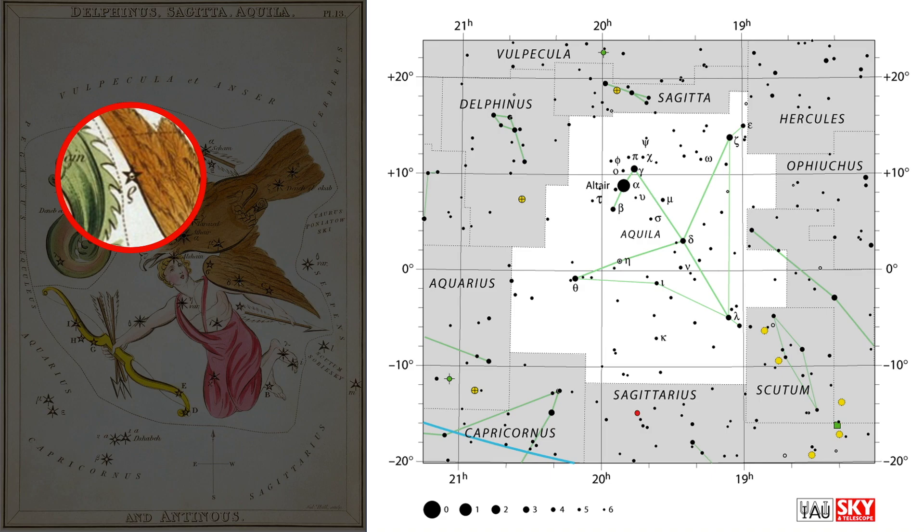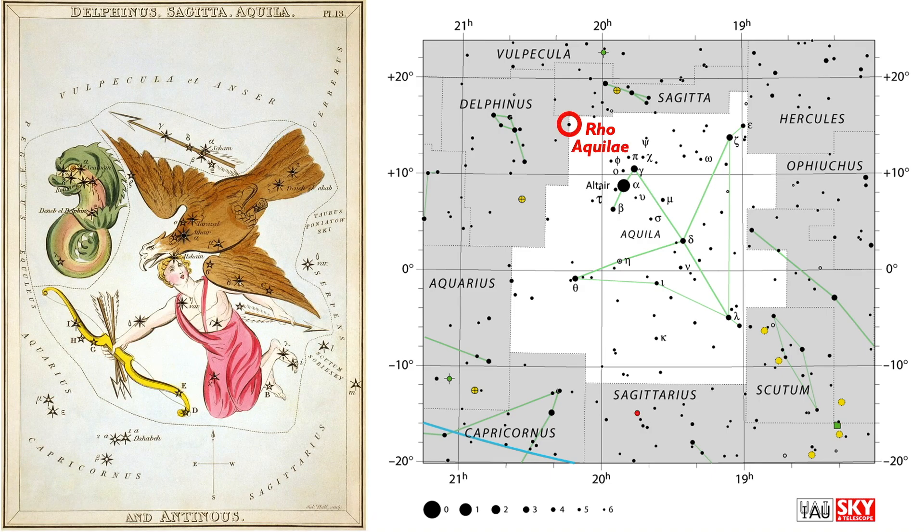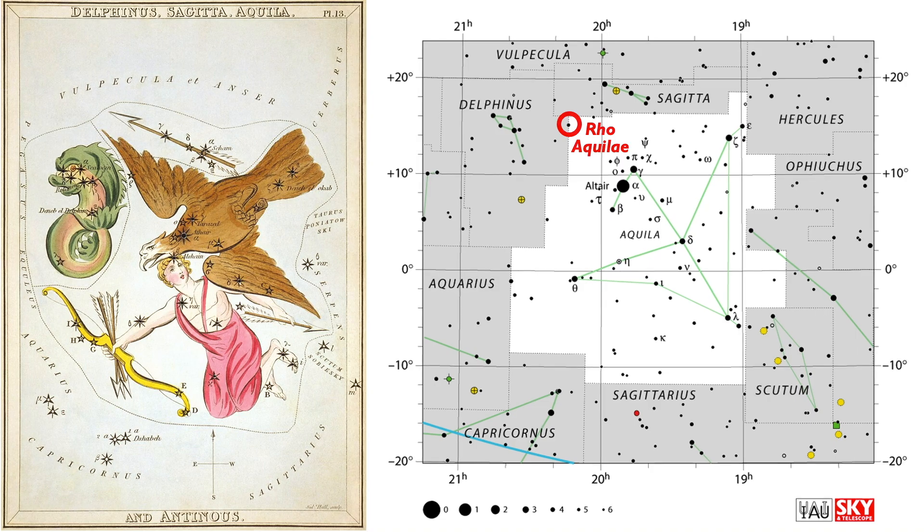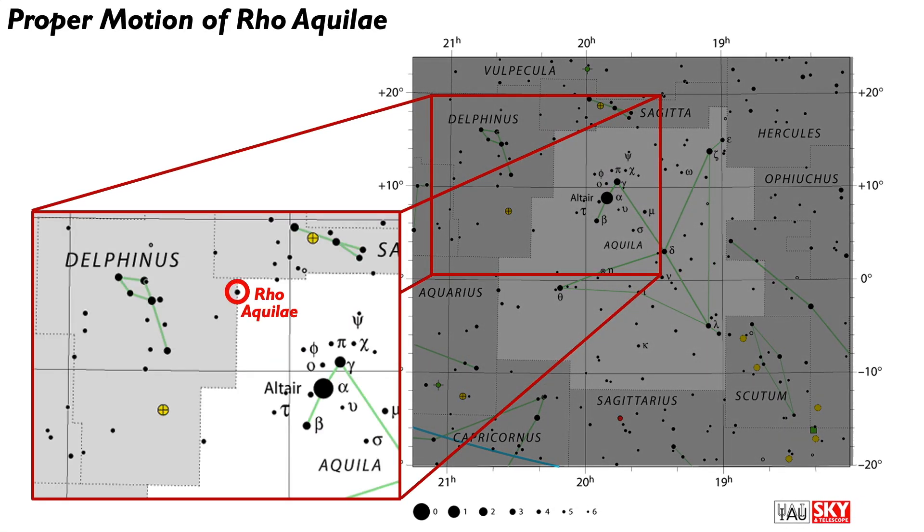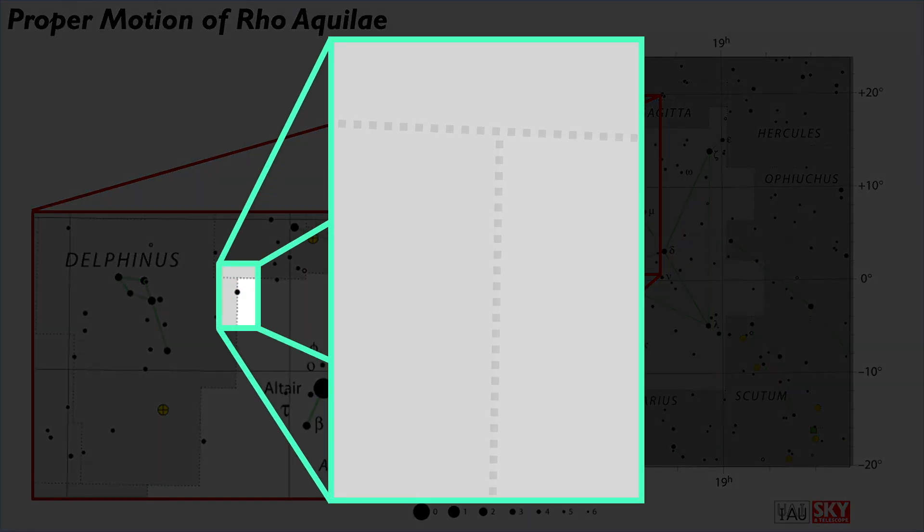You'll notice that historical star maps, like this one from 1825, show the star marked with the Greek letter rho within the bounds of the constellation Aquila, giving it the name Rho Aquilae. But come to find out, the star's proper motion carried it out of the constellation Aquila and into Delphinus, officially completing the crossing of this constellation border in 1992.